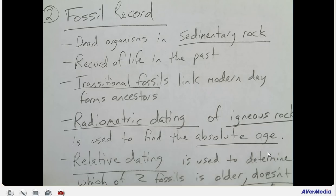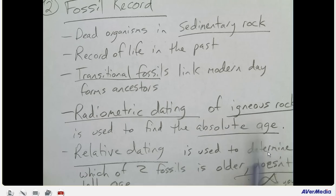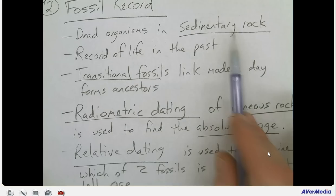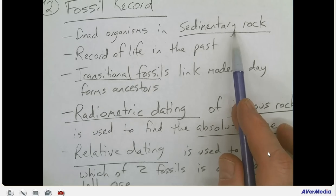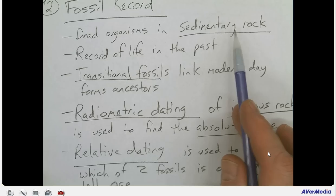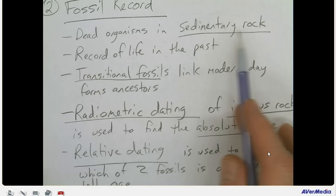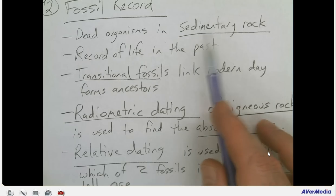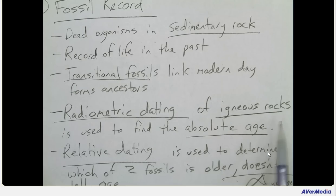We have a process called radiometric dating of igneous rocks — not sedimentary rocks — to find the absolute age of a rock. We don't use sedimentary rocks for radiometric dating because sedimentary rock is made up of different pieces that could each be a different age — one piece might be a million years old, another a hundred million, another a billion. However, igneous rocks trap radioactive isotopes within them, and you can use the decay of those isotopes to figure out how old they are.